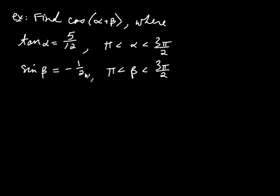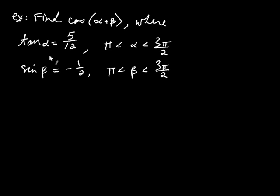In this problem we're asked to find cosine of alpha plus beta, given some information about alpha and beta. Tangent of alpha is 5/12, and alpha lies between pi and 3pi/2. Sine of beta is negative 1/2, where beta lies between pi and 3pi/2 as well. We're going to do this without using a calculator. Since I can't identify the exact angles, we're going to make use of the sum formula for cosine.